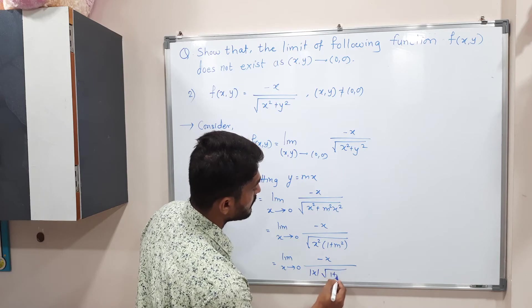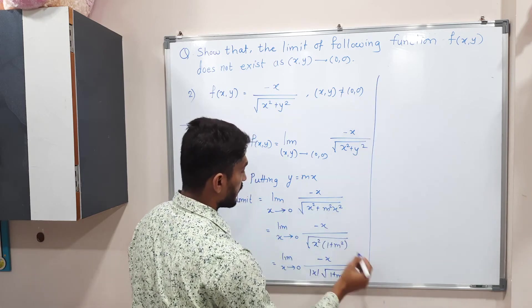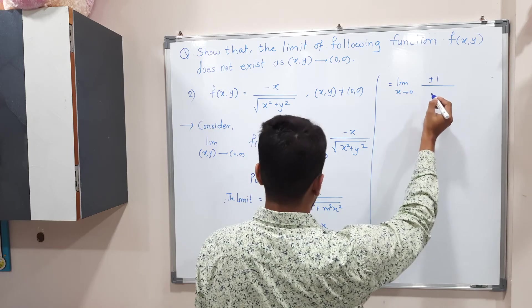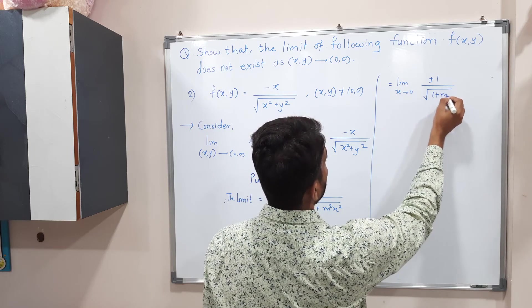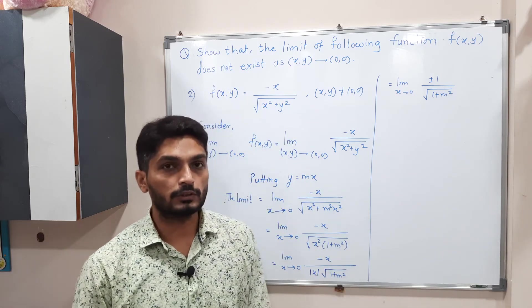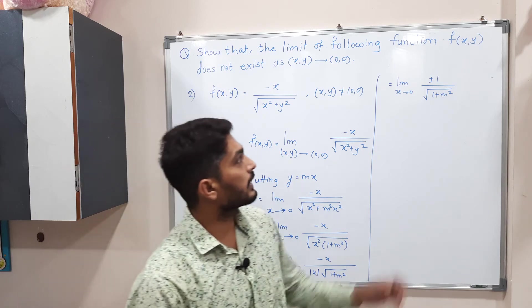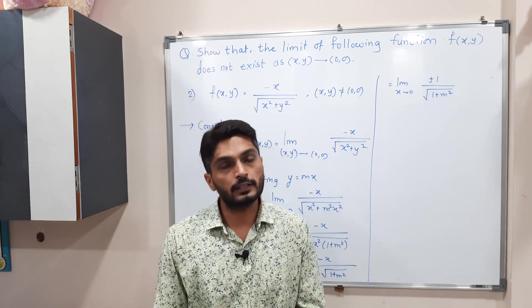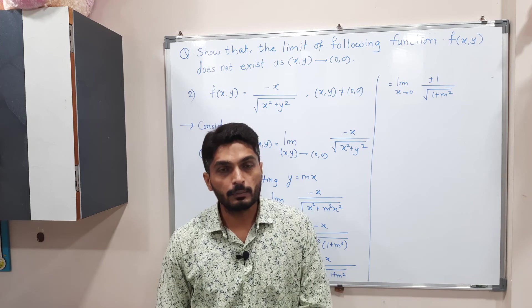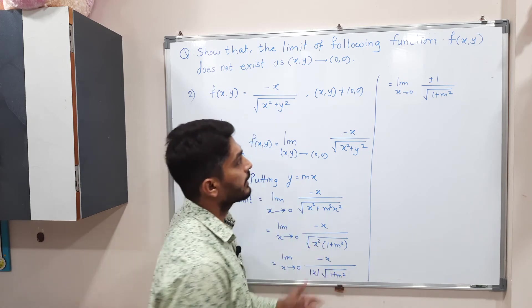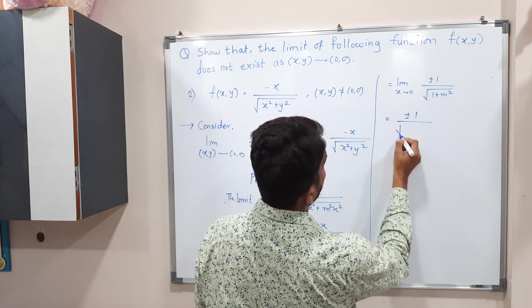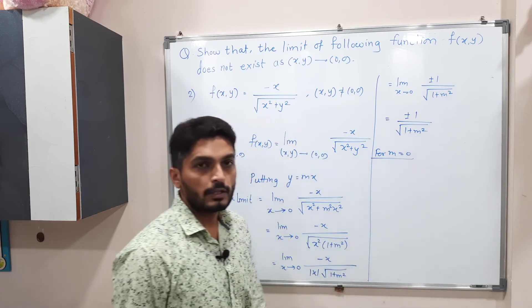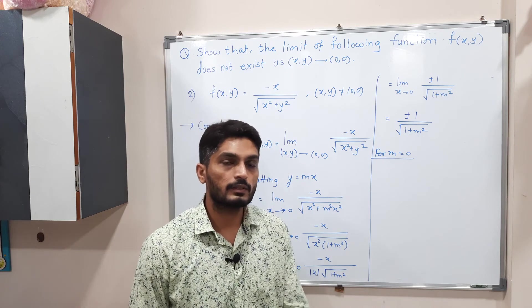We can cancel x with |x|, but since we don't know the sign of x — whether it is positive or negative — we write ±1/(√(1 + m²)). Applying the limit, there is no x remaining so the expression is independent of x, giving ±1 / √(1 + m²). There is actually no need to substitute different values of m since we already have ± — that alone tells us the limit does not exist.